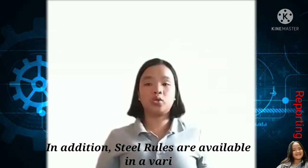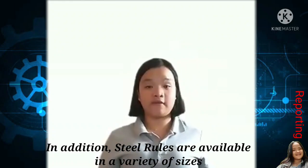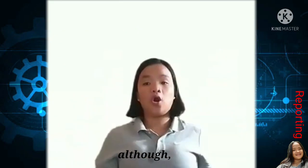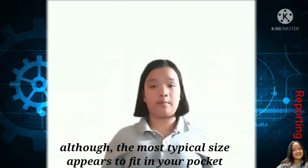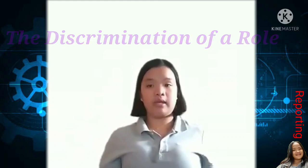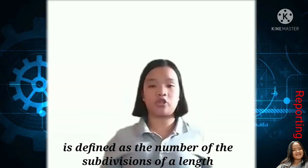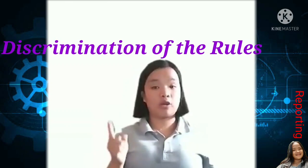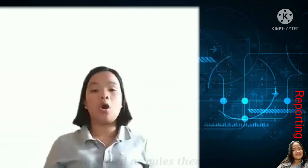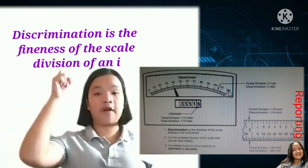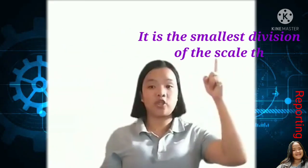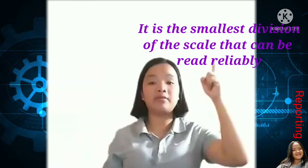In addition, steel rules are available in a variety of sizes ranging from a fraction of an inch to several feet, although the most typical size fits in your pocket. The discrimination of a rule is defined as the number of subdivisions of a length, and it is as varied as the rules themselves. Discrimination is the finest scale division of an instrument — the smallest division that can be read reliably.